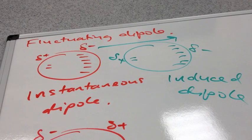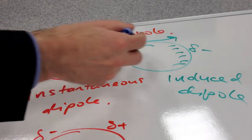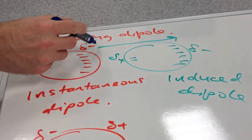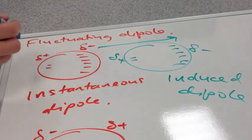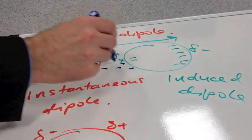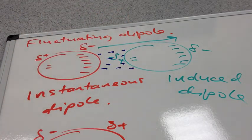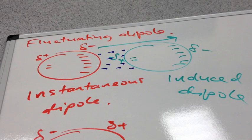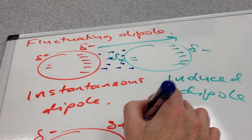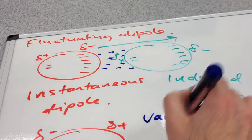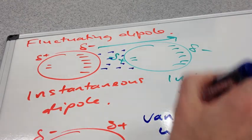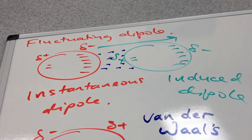So we have two types of dipoles. We have the instantaneous one, and the induced one. Now, what you can see is that the two molecules now, we have a slightly negative end of one molecule next to a slightly positive end of another molecule, and so we get an attraction. So that blue dotted line there is to represent the attraction between the two molecules, and that is what we call a Van der Waals force.